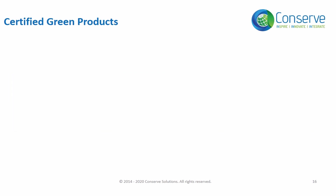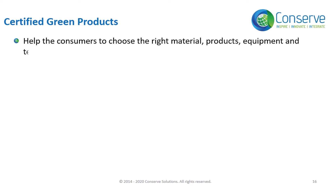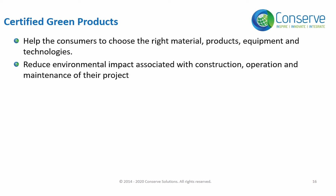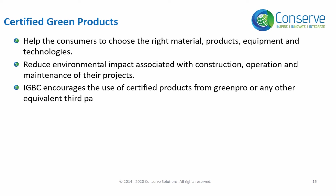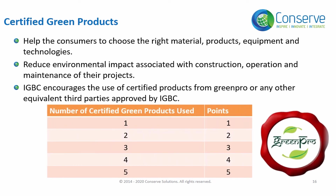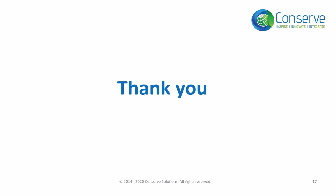The next strategy is to use certified green products. Certified green products help consumers choose the right materials, products, equipment, and technologies, and thereby reduce the environmental impact associated with construction, operation, and maintenance of their projects. IGBC encourages the use of certified products from GreenPro or any other equivalent third parties approved by IGBC. Points are allotted based on the number of certified products used in the project.